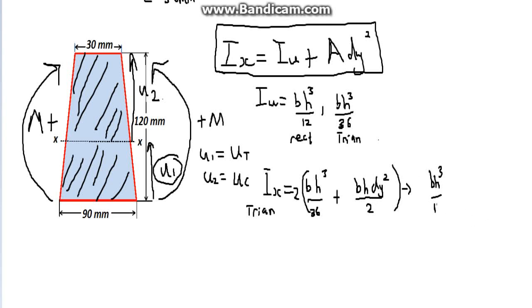And this would be, in the end, base times height cubed divided by 18, because you are dividing this by 2. And removing that with that, 2 applies to each and every number in this one. Plus base times height dy squared. That's what it is in the end. This is for the triangle.